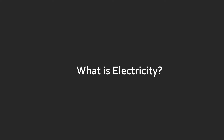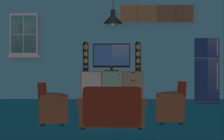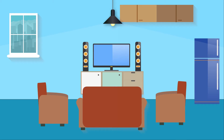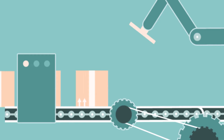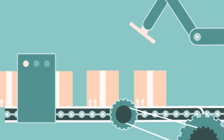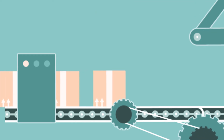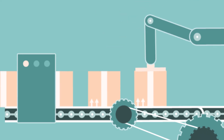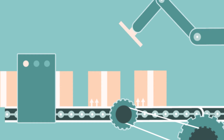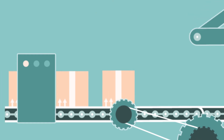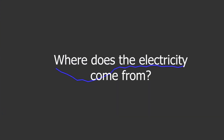What is electricity? Any appliances that we use in our daily lives, such as household appliances, office equipment, and industrial equipment, almost all of those things take electricity. Therefore, we should understand electricity. The first question that we will find out the answer to is: where does electricity come from?